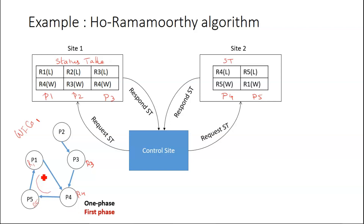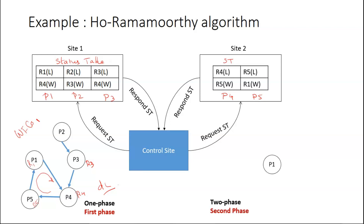There is a cycle, so the control site finds a deadlock — deadlock detected. But the two-phase algorithm does not stop here. It has one more step: a second phase, where one more request will be sent. This is the two-phase algorithm.